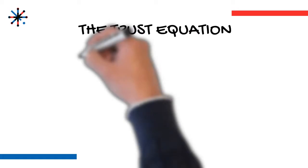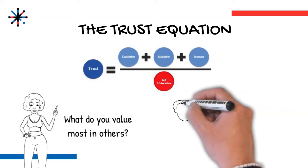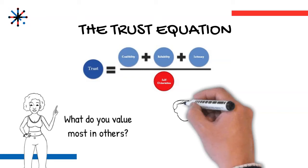So, as you think about the trust equation and its four elements—credibility, reliability, intimacy, and self-orientation—which element do you value most in others? And which element do you think others value most in you? For this and other perspectives on growing your leadership, please visit www.think.org.